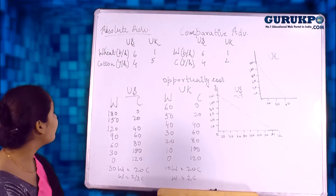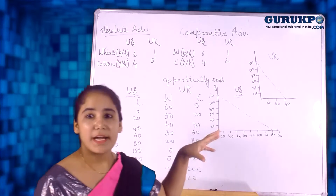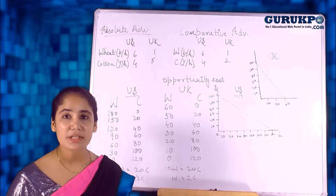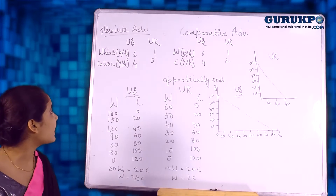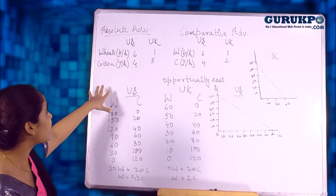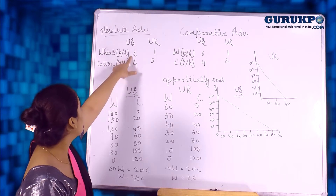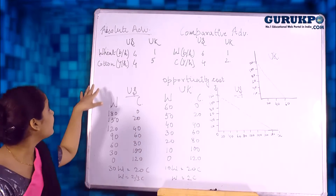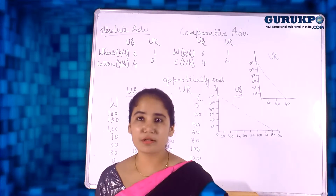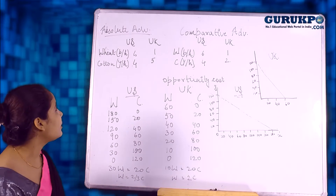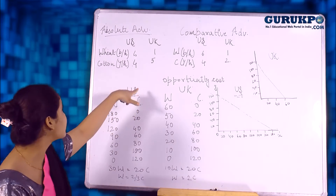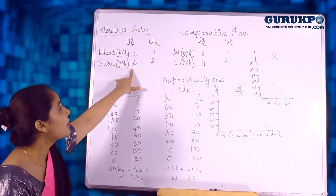In absolute advantage, if one nation is efficient enough to produce a good in large amounts, it would prefer to export that good, and whichever good it has less efficiency in, it will import. With the help of this table, US is producing six bushels of wheat per hour while UK produces only one bushel per hour, so US has more efficiency in wheat. UK is more efficient in cotton, producing five yards per hour while US produces only four yards of cotton.